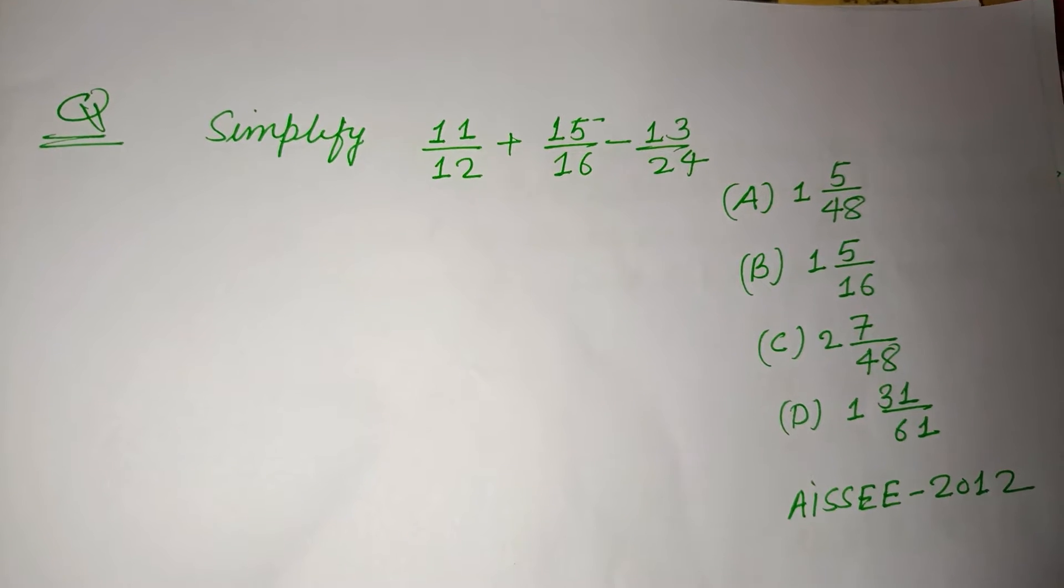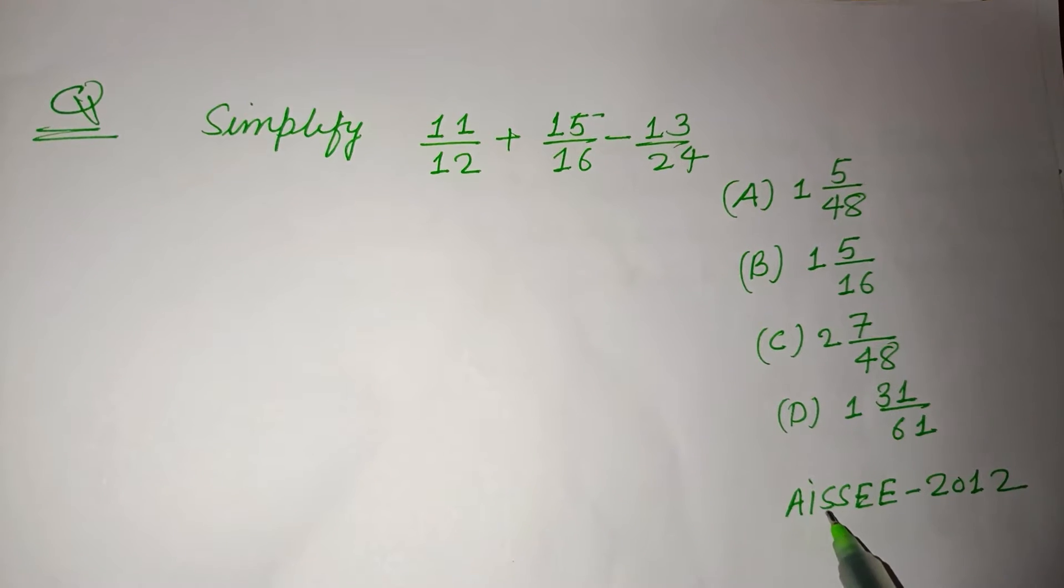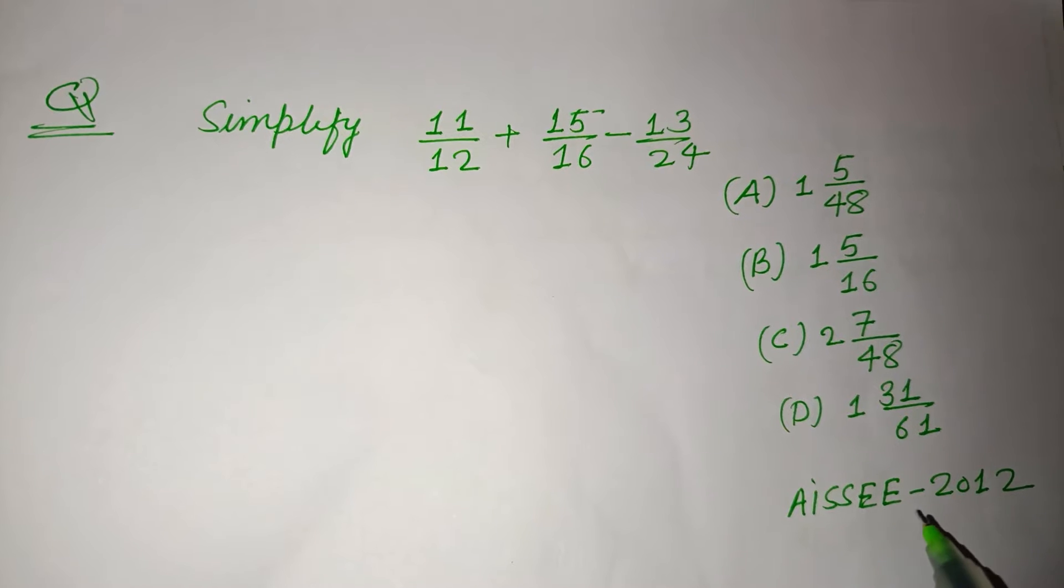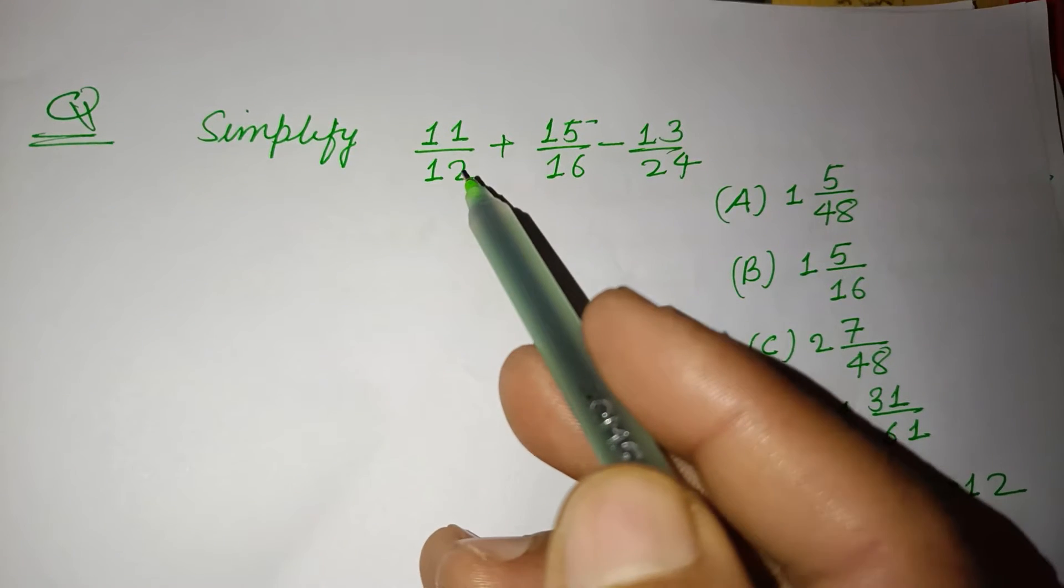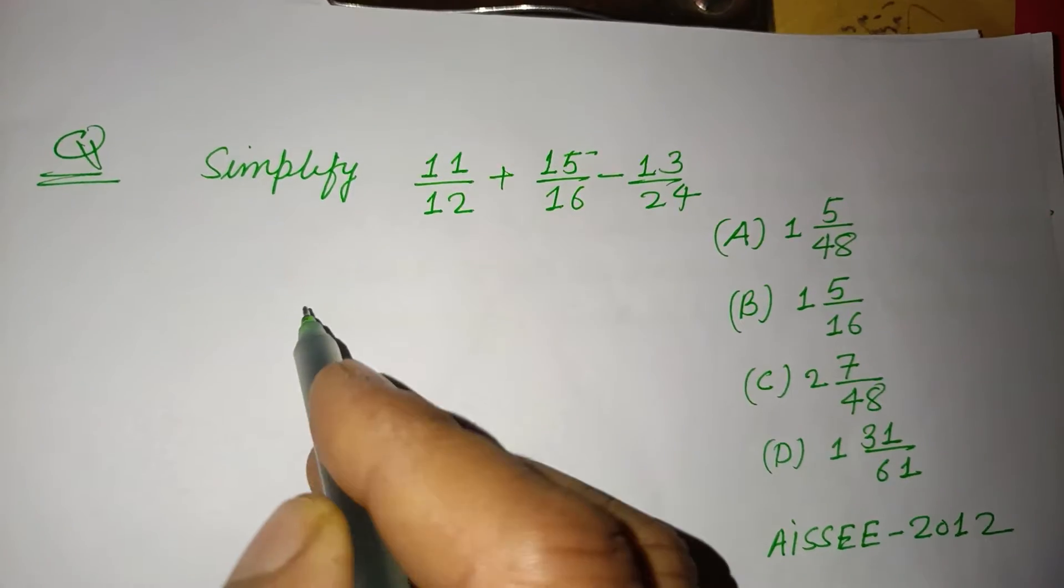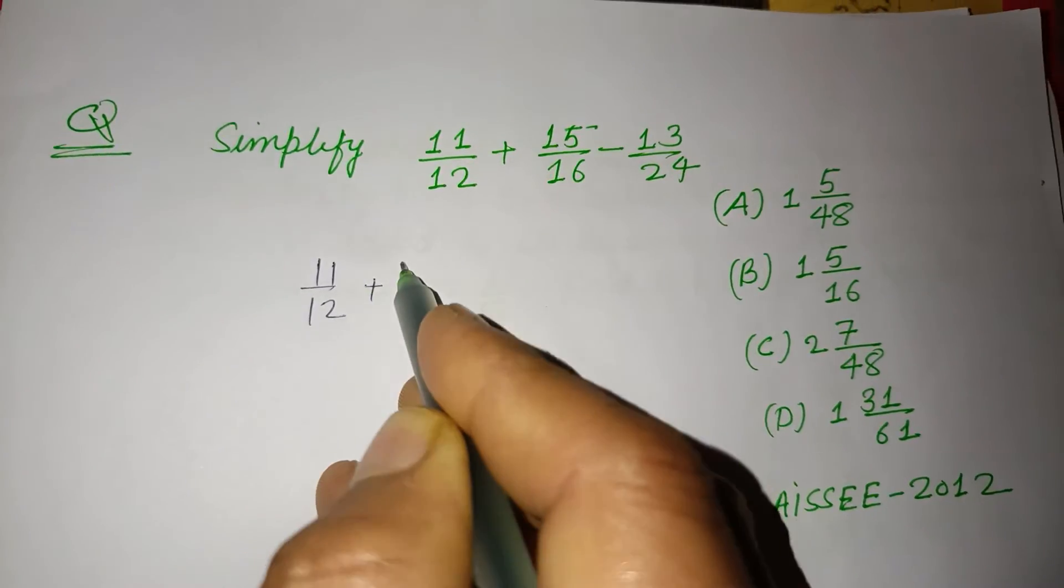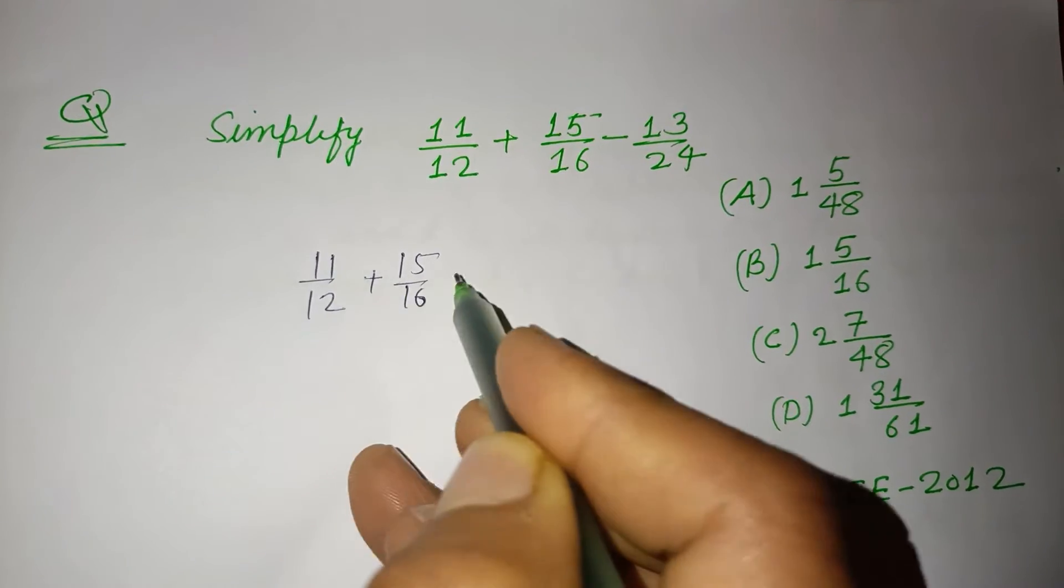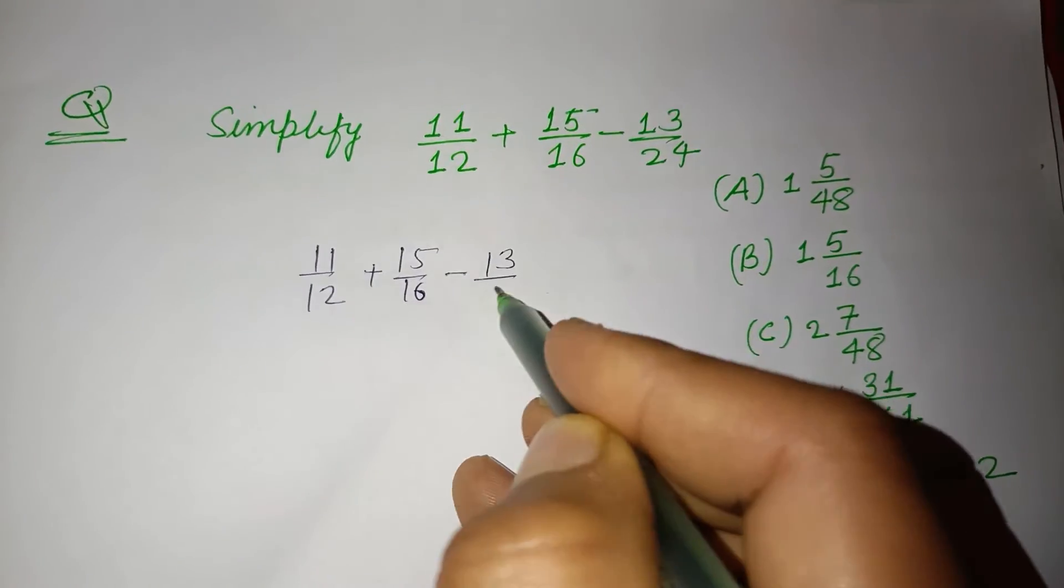Hello viewers, welcome to this YouTube channel. This question is from the All India Scenic School Entrance Exam 2012. Simplify: 11/12 + 15/16 - 13/24.